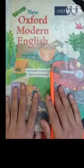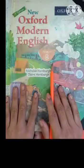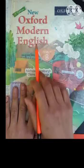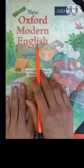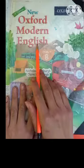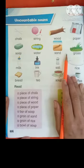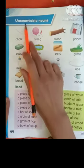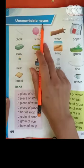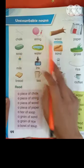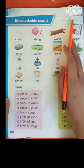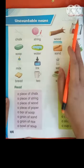Assalamu alaikum students, how are you all? Students, open your modern English book, page number 44. On this page, the topic is uncountable nouns and we have to learn new words.